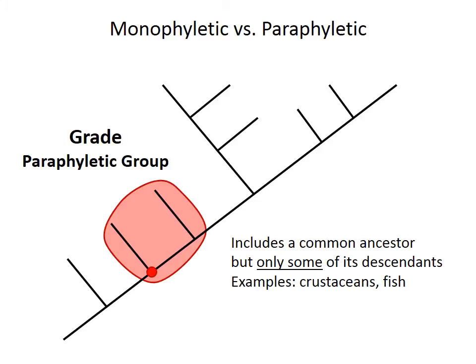In this example, the red group includes a common ancestor of both species but excludes the six species at the top of the cladogram that also arose from that ancestor. The blue group is also paraphyletic because it includes only two of the three descendants of the common ancestor marked at the blue node.